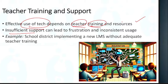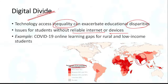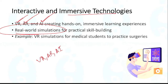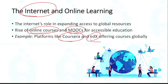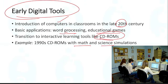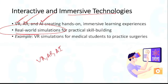So remember: digital divide and proper training of teachers are the key challenges. Once addressed, technologies like VR, AR, AI — immersive technologies — along with mobile learning apps, internet, and online learning through MOOCs like Coursera, edX, and Unacademy, can be effectively utilized. These platforms increase distant learning and accessibility to education. That completes the section on technological advancements in education.